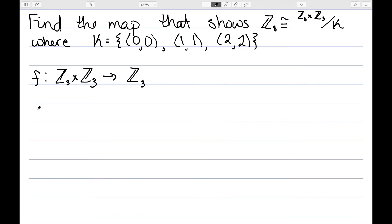I'm going to start by listing out the elements of Z3 cross Z3. We have (0,0), (0,1), (0,2), we also have (1,0), (1,1), (1,2), and then we have (2,0), (2,1), and (2,2).